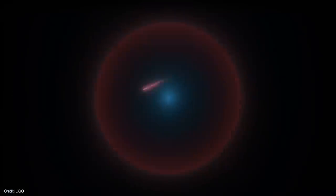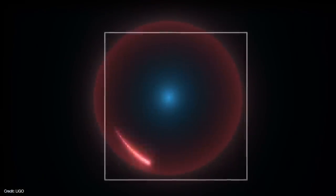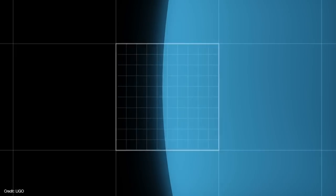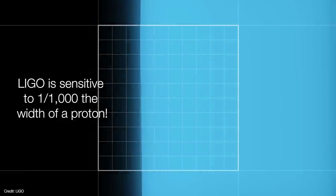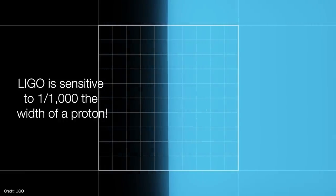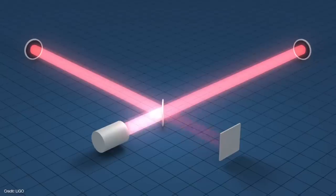These ripples in spacetime are incredibly tiny. Gravitational waves from a black hole merger move the mirrors by no more than the width of a single proton. That makes gravitational wave detection a tricky business because anything, even a helicopter flying overhead, could potentially trigger a false signal.